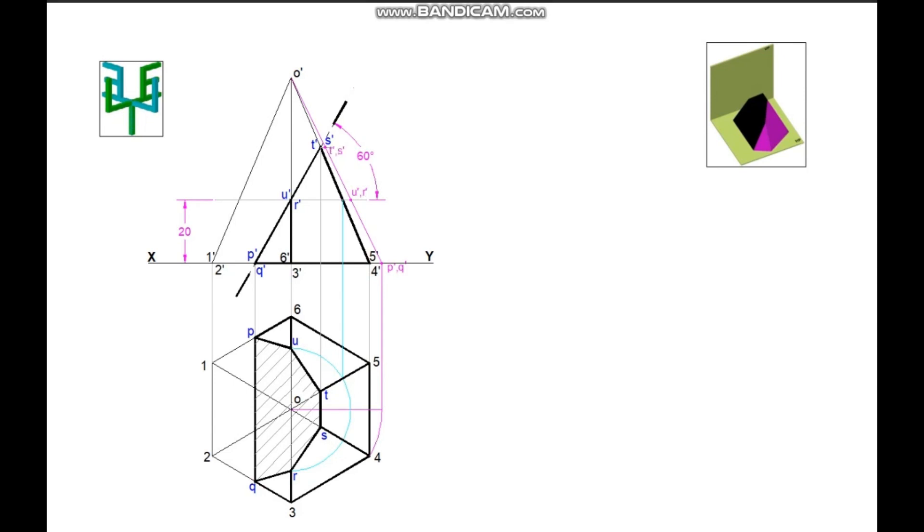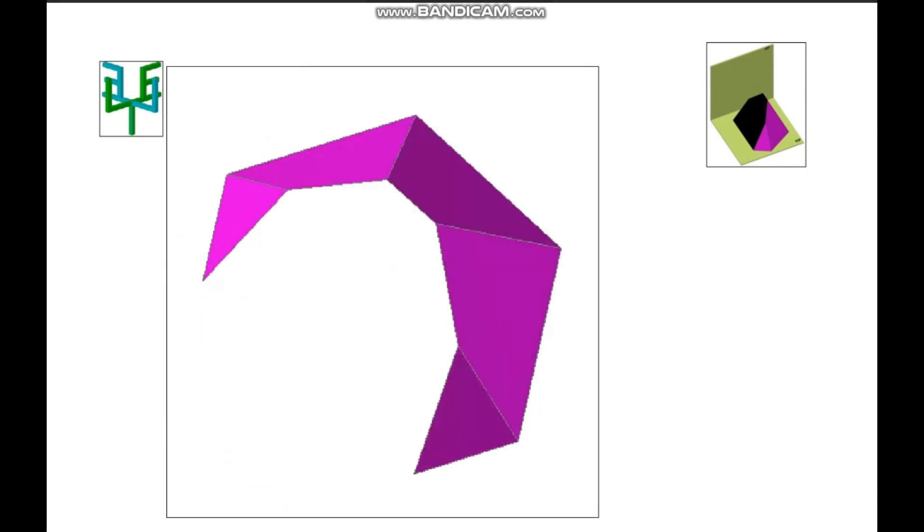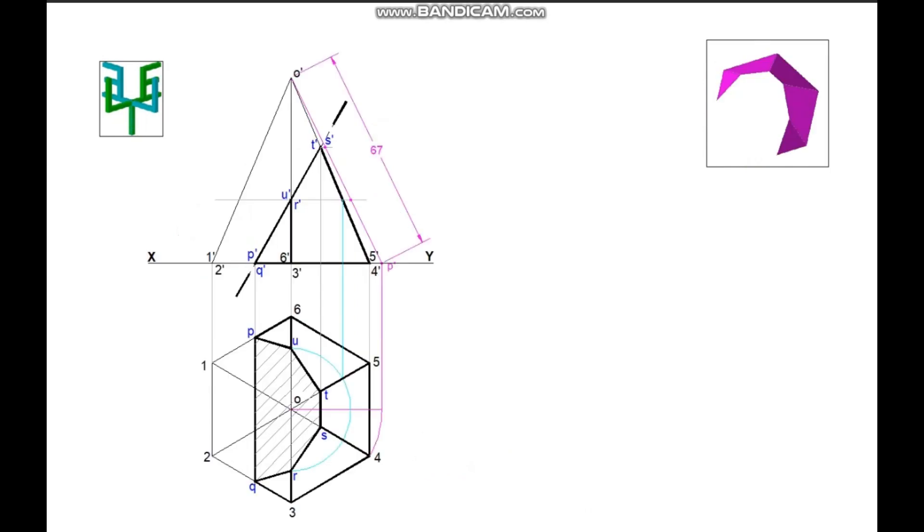To draw the development, measure the true length of the slant edge. Draw a line with the same length. Draw an arc with this length as radius. Cut 6 points on this arc with the base edge of pyramid as radius. Name these points. Join these points with straight lines. Join these points to the other end of vertical line, that is the apex point. This is the development of a normal hexagonal pyramid without any sectioning.